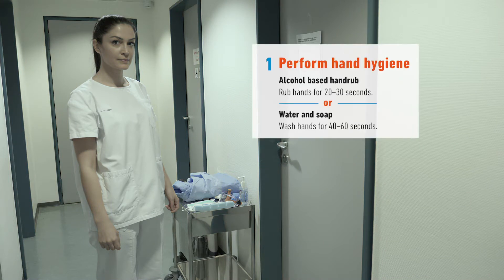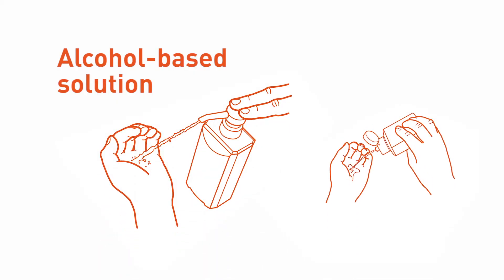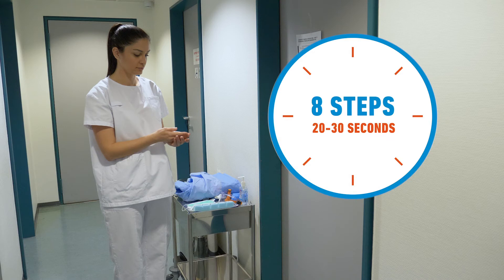Step 1 is to perform hand hygiene. You can clean your hands by rubbing them with an alcohol-based solution. It is the fastest and most effective method and better tolerated by your skin than other methods. Follow the WHO technique that ensures all the surfaces of the hands are carefully covered by the product and will eliminate the microorganisms on your hands.